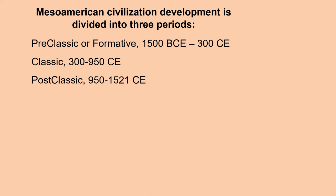Mesoamerican civilization development is divided into three periods by archaeologists: the pre-classic or formative period from 1500 before the Common Era to 300 Common Era, classic from 300 to 950, and post-classic from 950 up until Spanish Incursion in 1521.